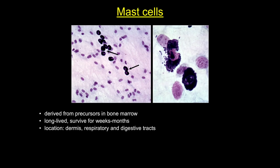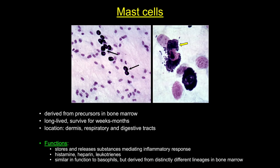Mast cells are our final type of resident cell in connective tissue. These dark cells with their abundant prominent granules are very easy to spot in connective tissue. Mast cells function in the inflammatory response — they store and release histamine, heparin, and leukotrienes. Once thought to be derived from basophils, it's now known that while they do arise from bone marrow, they have a progenitor that is distinct from the basophil lineage.